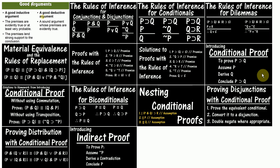And then we started to do proofs, first with the rules of inference. Then we moved on to learning about conditional proof, which is a method for proving a conditional by assuming its antecedent and deriving its consequent. And with conditional proof in hand, we started doing proofs of various rules of replacement. There were a few we could not do with just conditional proof and our previous rules — we needed indirect proof, which lets us prove something by showing that the assumption of its opposite leads to a contradiction.